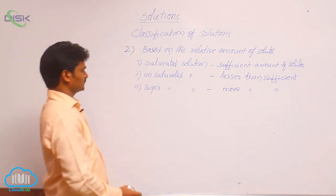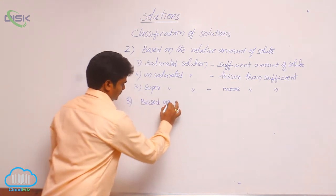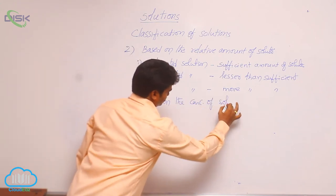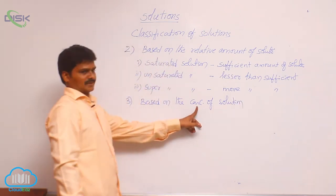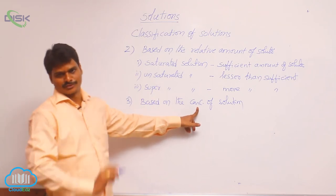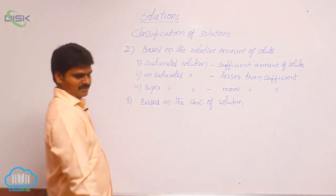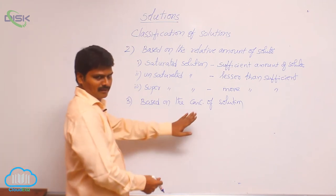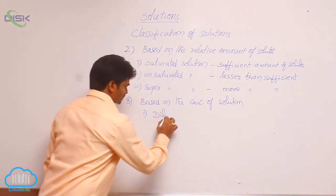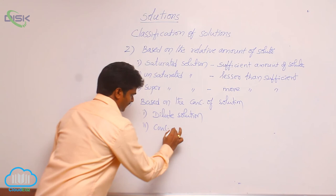Third category is based on the concentration of solution. What is concentration? Concentration means it is the amount of solute present in one liter of solution. Amount of solute present in one liter of solution is called concentration of the solution, also called strength of the solution. In this category, there are two types: one is dilute solution, and the other one is concentrated solution.